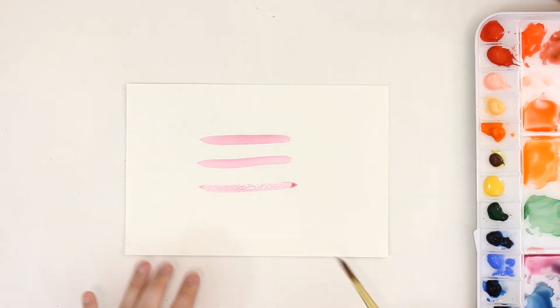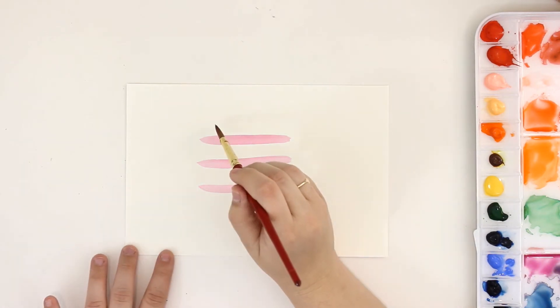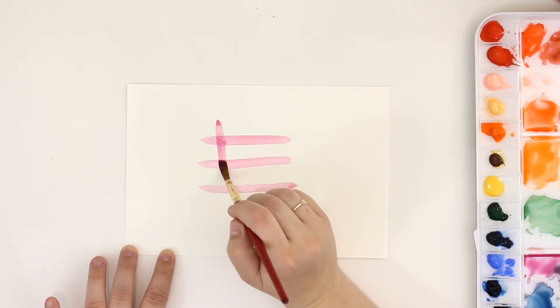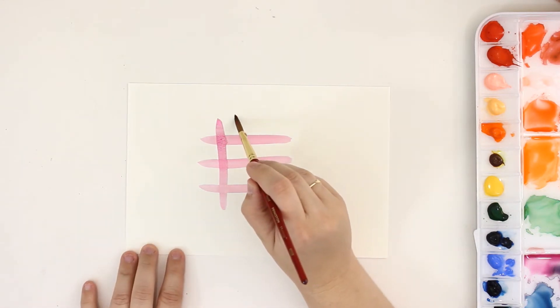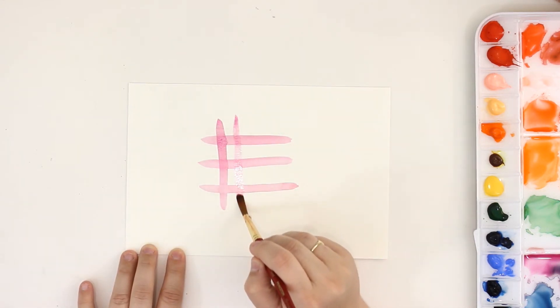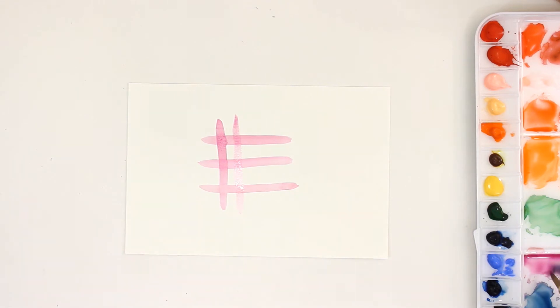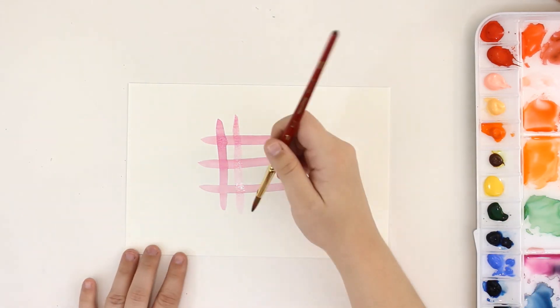Next, add in lines running vertically over the previous lines. You can see how the paint is darker where the lines have crossed. I use this technique when I want to darken the centers of my flowers or leaves after they're done drying.